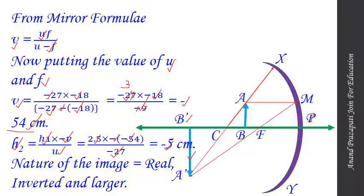Therefore, the image is larger than the object. When we move the object closer to the mirror, the screen must be moved beyond the center of curvature of the mirror. I hope there is no problem understanding the calculation or each step of this numerical solution. This solution will be useful to students who need help during the solution of numerical problems of optical instruments. Once again, I thank you all for staying with me till the last step of this numerical problem.